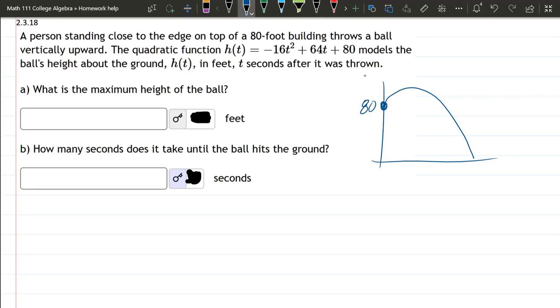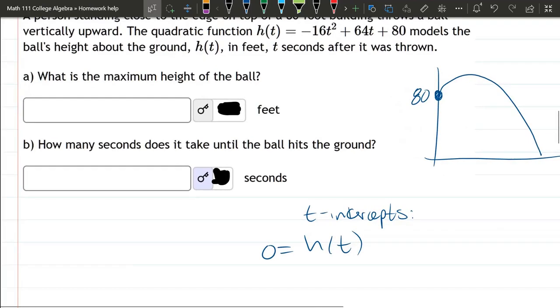So let's get the t-intercepts first. You're setting zero equal to the function h(t). Normally we'd be finding x-intercepts where you'd set f(x) equal to zero, but we're finding t-intercepts here. So our h(t) function at the top there, negative 16t squared plus 64t. And now it's a great time to make sure your t's don't look like your pluses. Plus 80 equals zero.